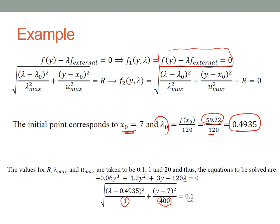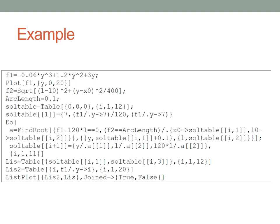The initial guesses are very important. We can use the previous solution values — lambda_0 = 0.4935 and y_0 = 7 — as initial guesses, or values close to them. Some mathematical code is provided to trace the curve, using an arc length of 0.1, so you can study the code and see how it applies to this example.